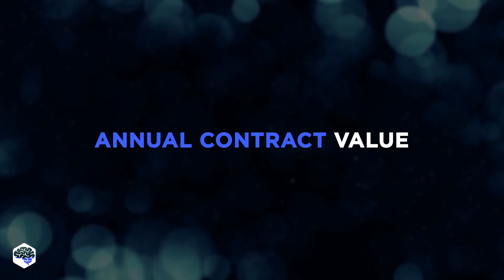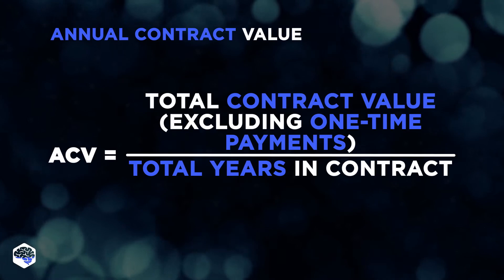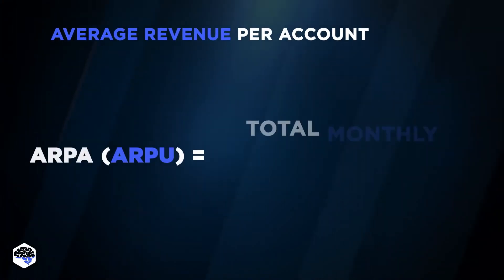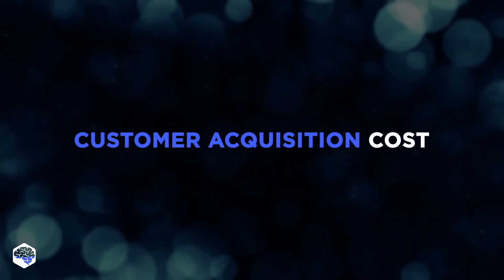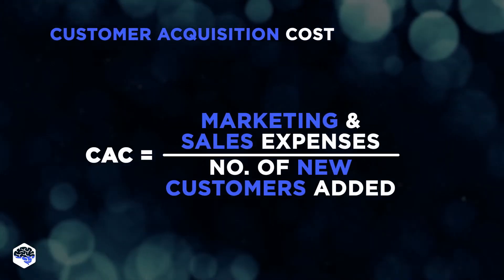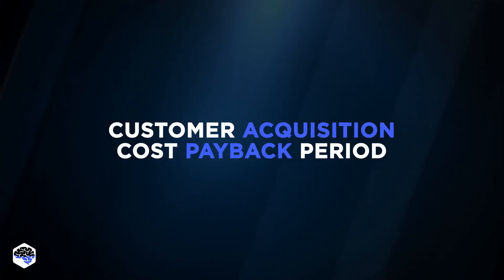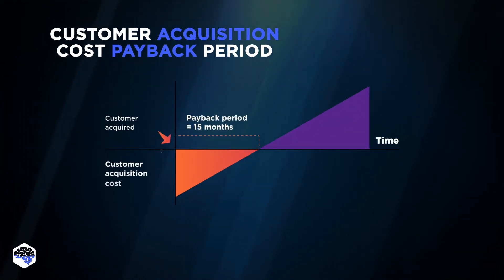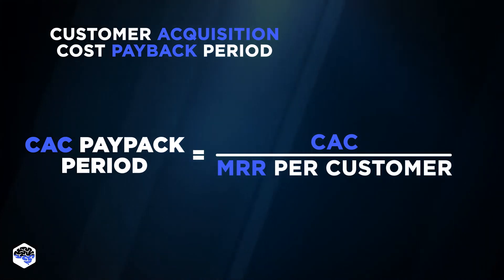Total Contract Value respectively shows income during the whole period of the contract. Average Revenue Per Account indicates how much revenue is committed by a standard customer. Customer Acquisition Cost is one of the most important metrics — you need to divide your sales and marketing expenses by the number of new customers. We also track Customer Acquisition Cost Payback Period, which shows how much time it takes to cover the cost of signed customer acquisition. It is counted by dividing CAC by MRR per customer.